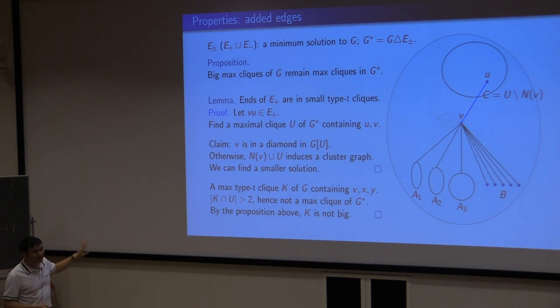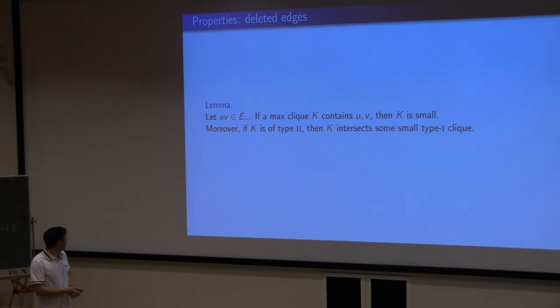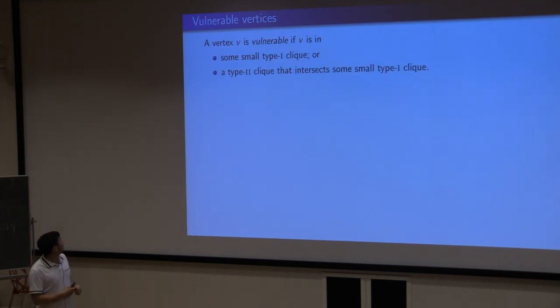After, we know the ends of the added edges. The deleted edges is a little bit more complicated, but it's still related to small type one cliques. The point is, everything is about small type one cliques. A deleted edge is either in a small maximum clique, or that clique intersects some small type one clique.